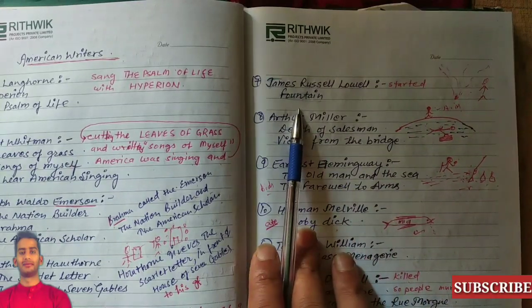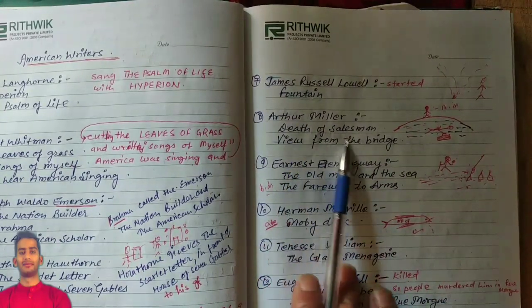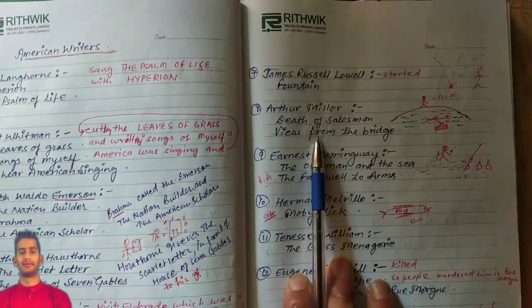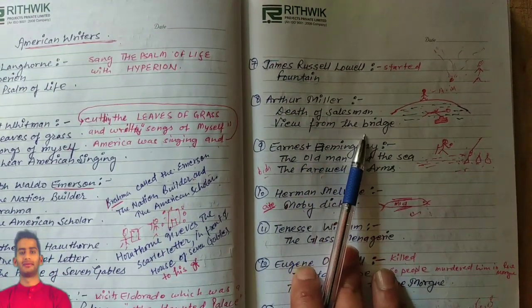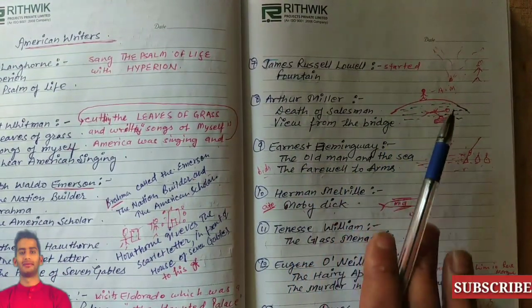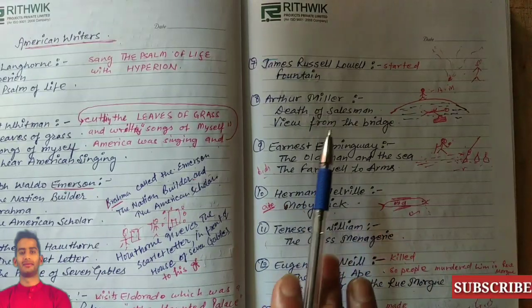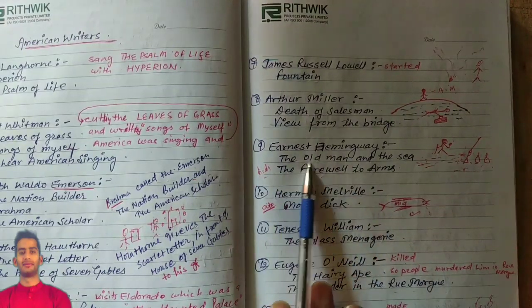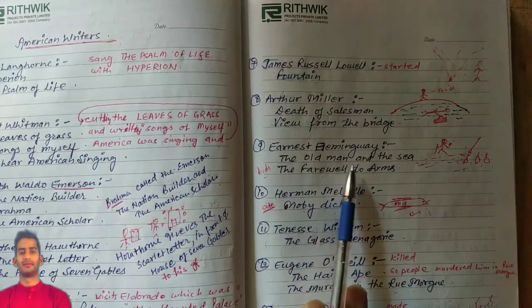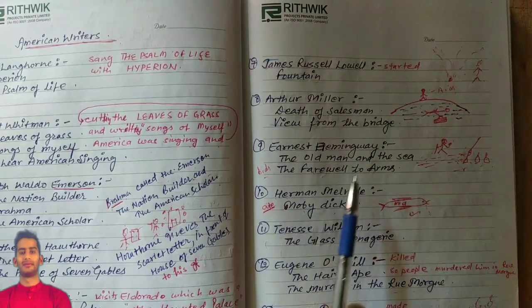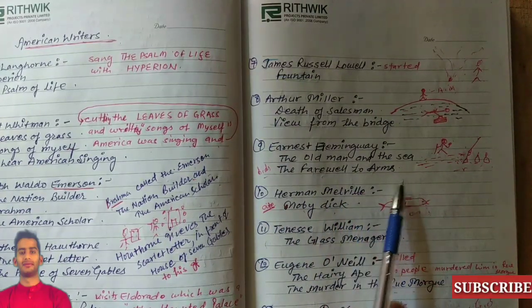Next one is James Russell Lowell — The Fountain. Arthur Miller's works: Death of a Salesman and A View from the Bridge. With the picturization method, you can remember all these works. Ernest Hemingway: The Old Man and the Sea and A Farewell to Arms.